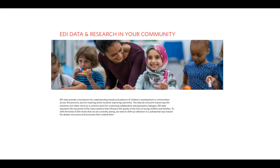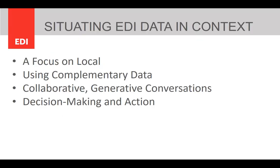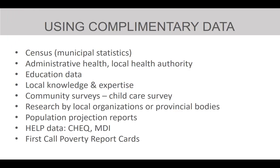On pages 12 to 14, there is some information about situating EDI data and research in your community. Four things to consider when looking at community data are provided: a focus on the local, using complementary data, collaborative and generative conversations, and decision making and action. For example, we recommend considering additional types of data and information that will help to contextualize HELP data and provide additional insights into the experiences of children and families in your community. Examples include municipal statistics, local health authority information, and research by local organizations or provincial bodies.